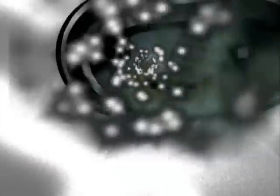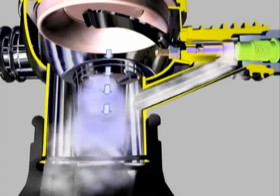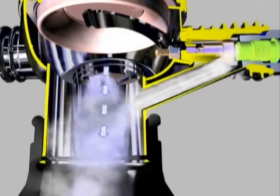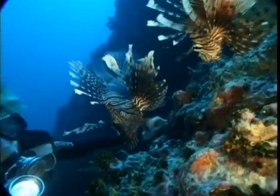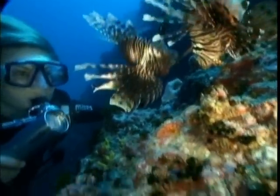But whenever a vortex motion occurs, it creates an area of depression in the center. This depression helps hold down the second stage diaphragm throughout inhalation, thus increasing the sensitivity of the regulator.